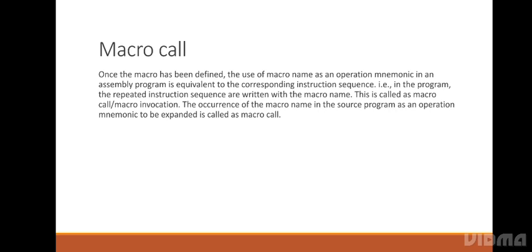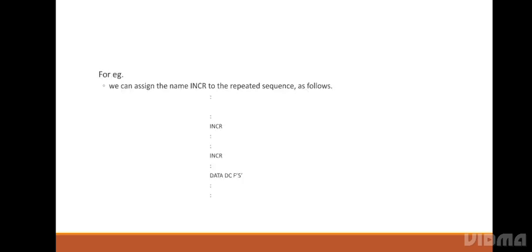Macro call: once the macro has been defined, the use of a macro name as an operation mnemonic in an assembly program is equivalent to the corresponding instruction sequence. The repeated instruction sequences are written with the macro name. This is called a macro call or macro invocation. The occurrence of the macro name in the source program as an operation mnemonic to be expanded is called a macro call.